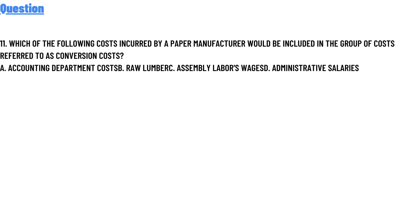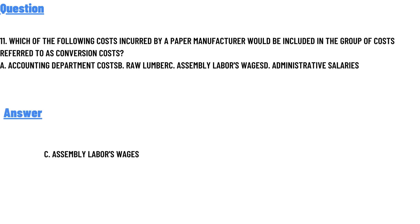Option C: assembly labor wages. Option D: administrative salaries. The correct answer to the question is Option C: assembly labor wages.